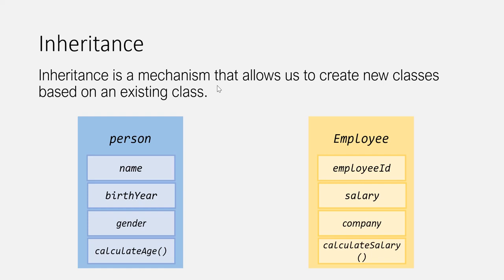Inheritance is a mechanism that allows us to create new classes or new objects based on an existing object. For example, here we have two objects — a person object and an employee object. An employee will also have a name, birth year, and gender property, and a calculate age method. If the programming language does not support inheritance, we will have to specify name, birth year, gender, and calculate age explicitly for the employee object.